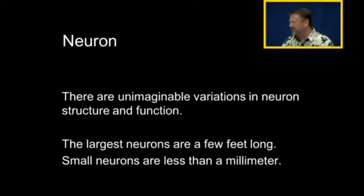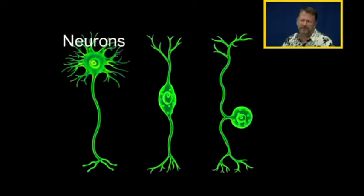There are unimaginable variations in neuron structure and function. The largest neurons are a few feet long, starting up here in the cerebrum, going down the spinal cord. Small neurons can be less than a millimeter. Tiny interneurons can be less than a millimeter. Neurons come in all sorts of shapes and sizes.